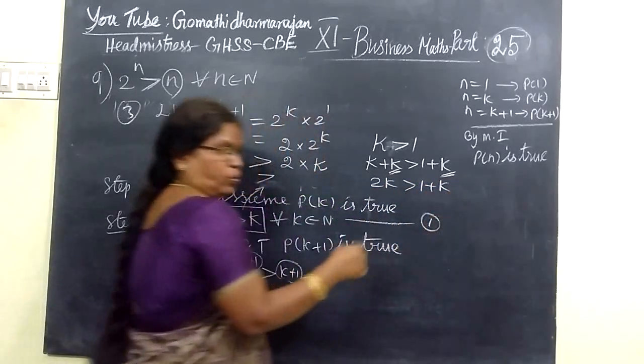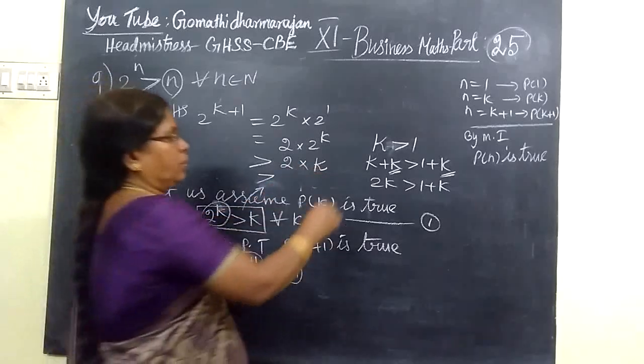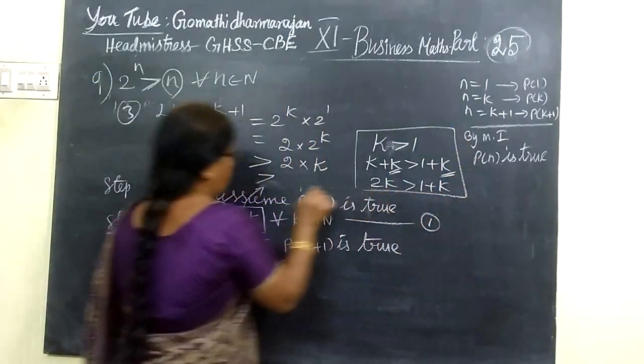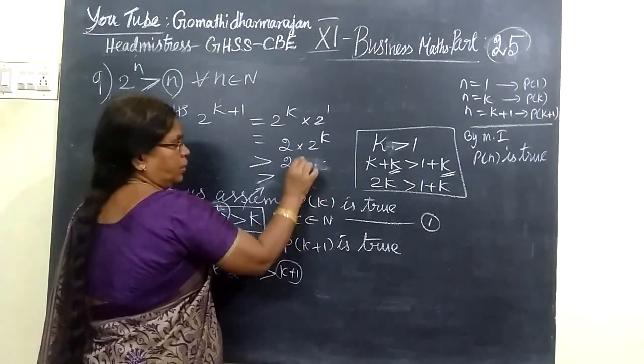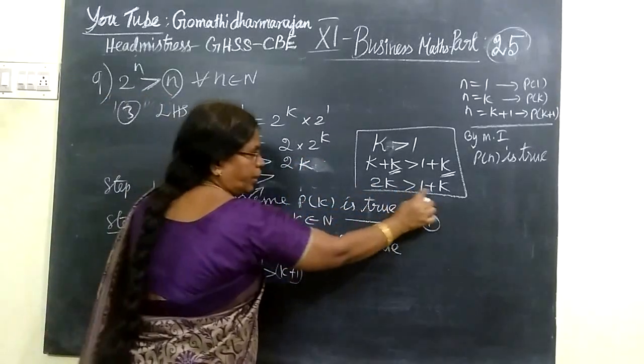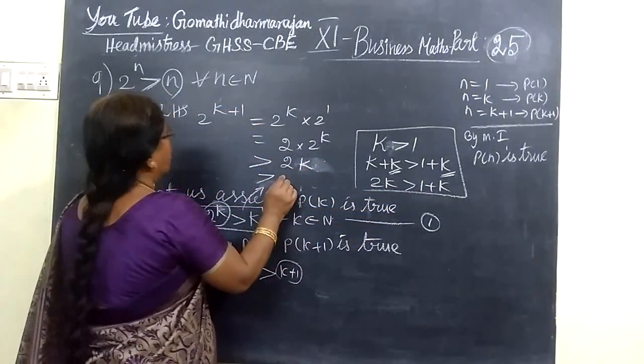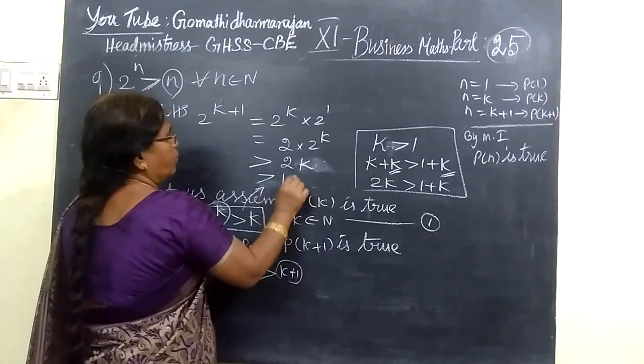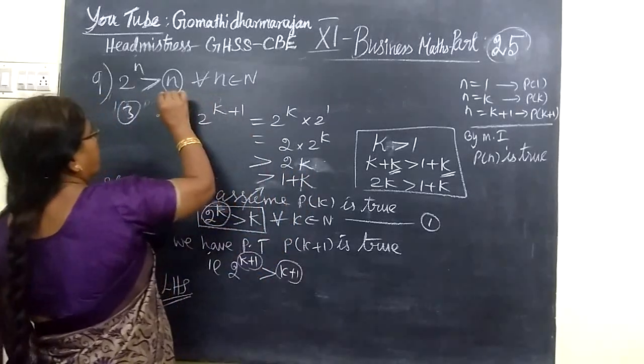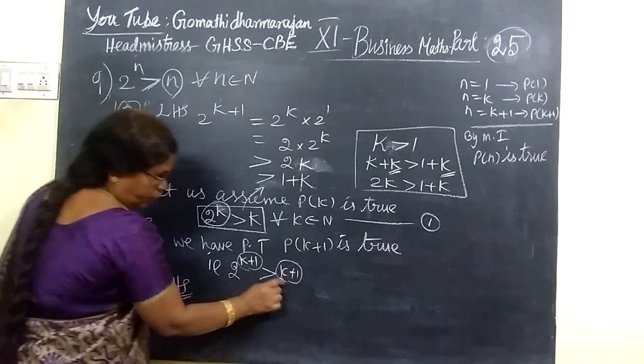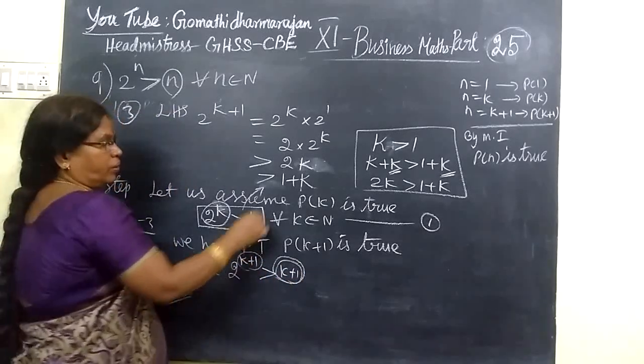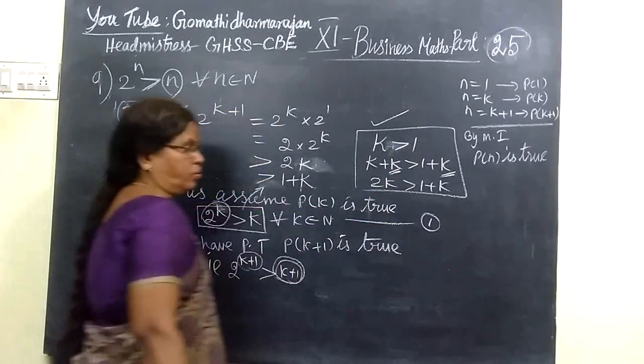The other method is the following: 2K is greater than 2K. So 2K is greater than 1 plus K. 2 is greater than 1 plus K, which is K plus 1. Here is the point to the other method. We will use the concept.